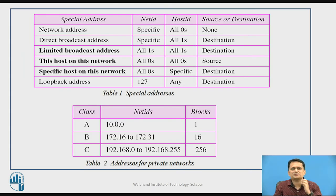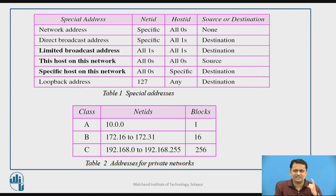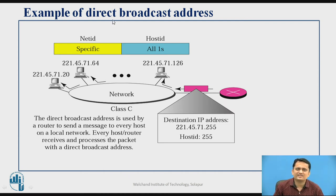Let us look at the special IP addresses. If the host ID is all zeros, it is a special IP address referring to a specific network — this is the network address. For example, in a class C representation, if all host ID bits are zero, you are referring to that particular network. You will understand this with the help of the diagrams in the next slides. Some IP addresses are also designated for private networks and can be freely used; other than these, you need to pay ICANN to get an IP address for internet connectivity.